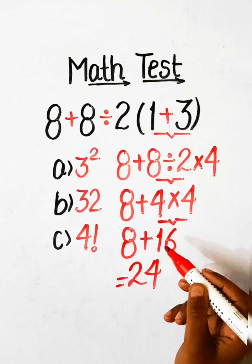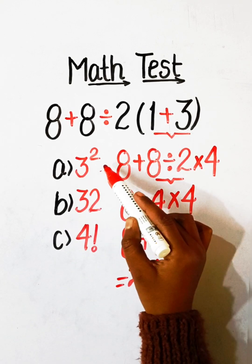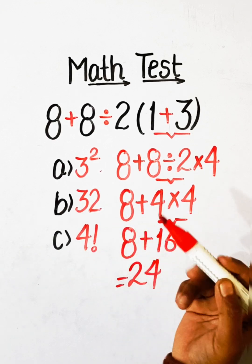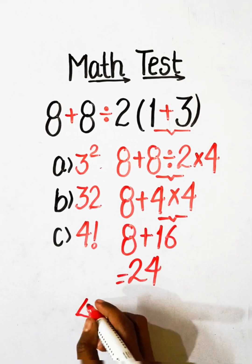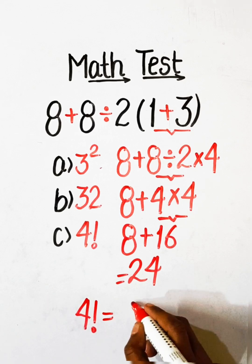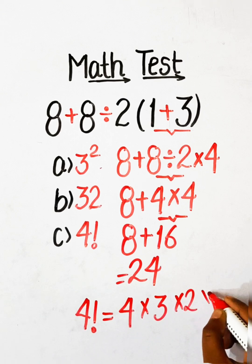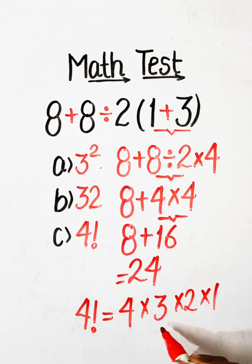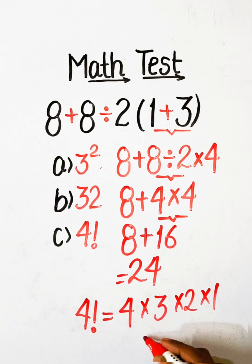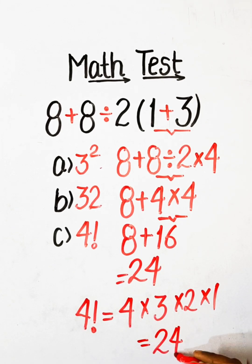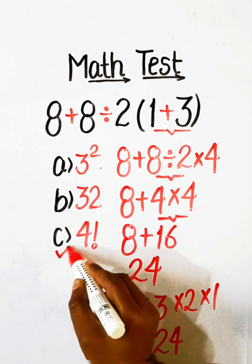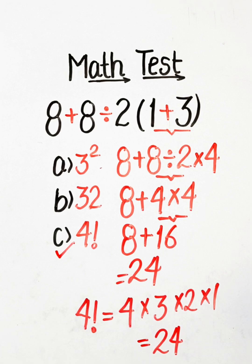In the options we have 3 squared which equals 9, 32, or 4 factorial. The value of 4 factorial equals 4 multiplied by 3 multiplied by 2 multiplied by 1: 4×3 is 12, 12×2 is 24. So the value of 4 factorial is 24, and our correct option is Option C: 4 factorial. If you like my videos please like, share, and subscribe to the channel.